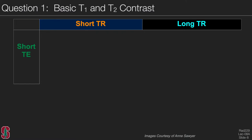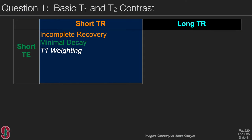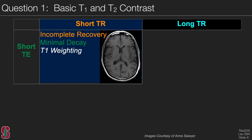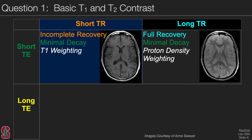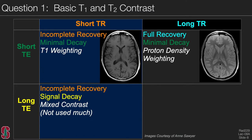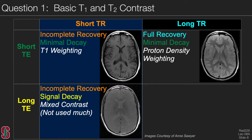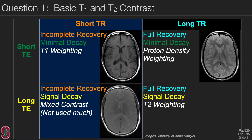A short TR and short TE gives incomplete recovery and minimal decay, resulting in T1 weighting. A short echo time with a long TR gives full recovery and minimal decay, avoiding both T1 and T2 contrast — this is proton density weighting. A long echo time with a short TR gives incomplete recovery and signal decay, resulting in mixed contrast which is not used very much as the image contrast is quite flat. A long TR and long TE gives full recovery but signal decay, resulting in T2 weighting.